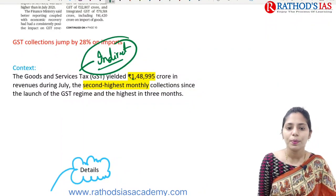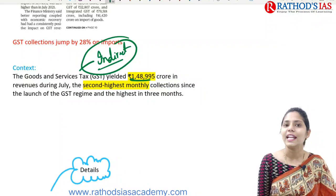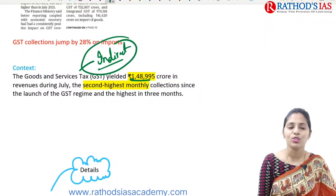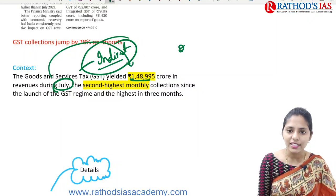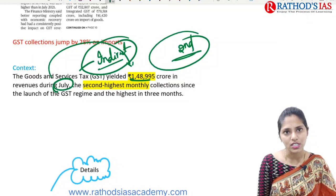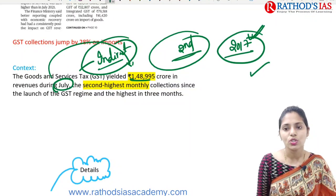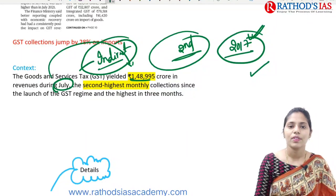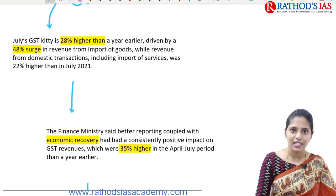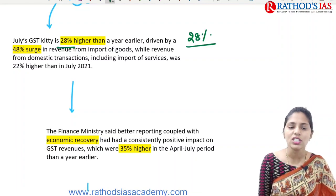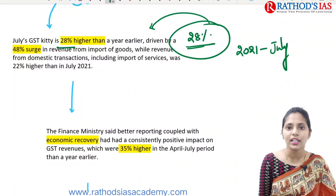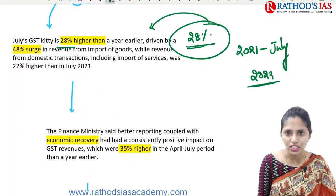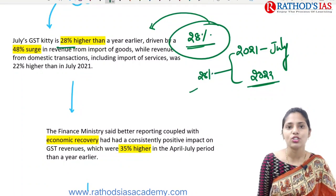GST yielded rupees 1,48,995 crore as revenue during the month of July. This is the second highest monthly collection since the launch of GST. GST was launched in 2017, and this is the second time we have had the highest GST collections. July's GST is 28% higher when comparing with the previous year, that is July 2021 versus July 2022.